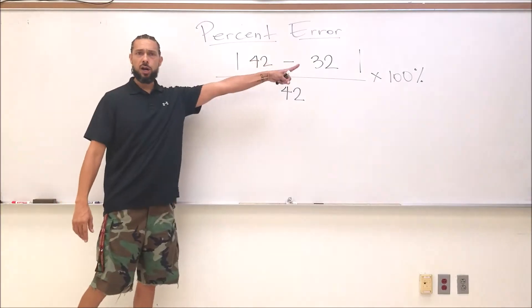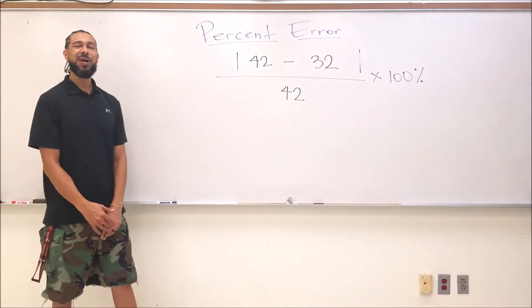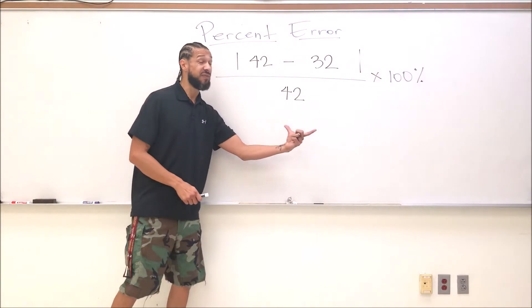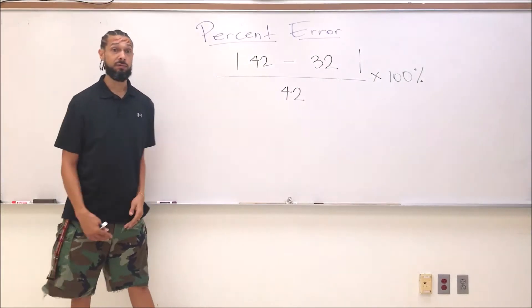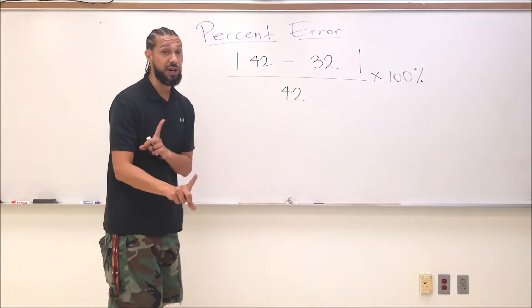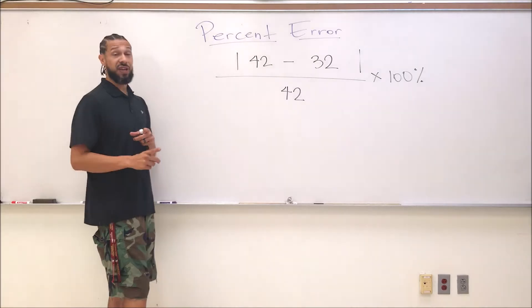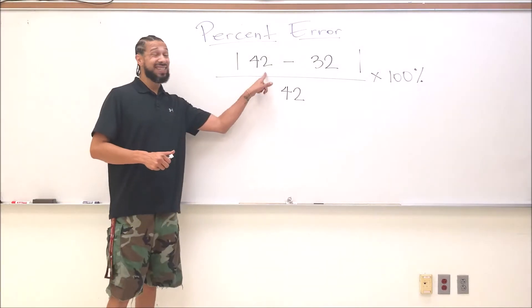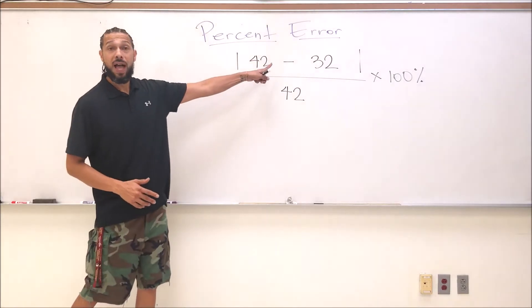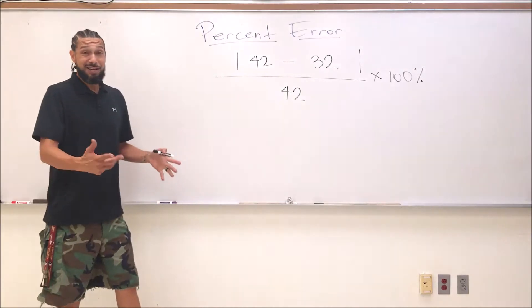Straight bars mean absolute value. Remember what absolute value means? Absolute value just means whatever the result is in here, whether it be positive or negative, its final result will be positive. Because when it comes down to it, doesn't matter whether I overestimate or underestimate, I'm still that same percentage off. I'll show you another example. Now this is what I guessed, this is how old she actually is.